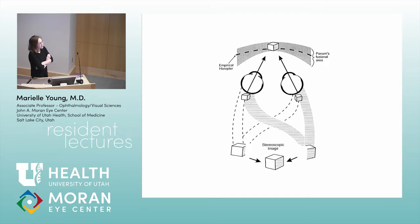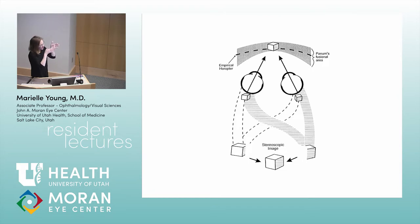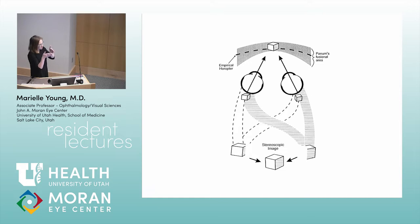Panum's fusional area is a little bit bigger than the horopter. The horopter is more of a theoretical point — or theoretical points — that line up such that if you look at them, your foveas are lined up exactly. Panum's fusional area is a little bigger because when your eyes aren't perfectly lined up together, you can still see one image within Panum's fusional area.